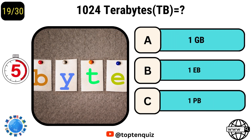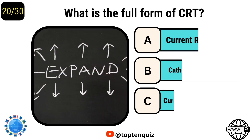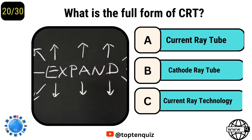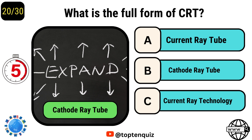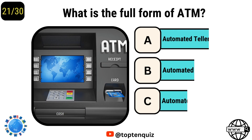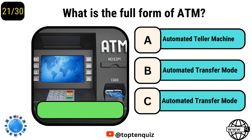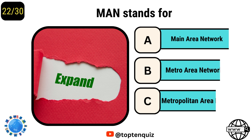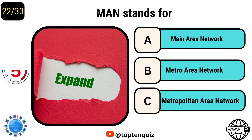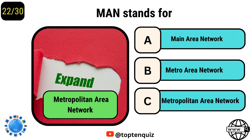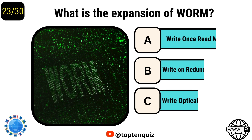One petabyte. What is the full form of CRT? Cathode ray tube. What is the full form of ATM? Automated teller machine. MAN stands for metropolitan area network.